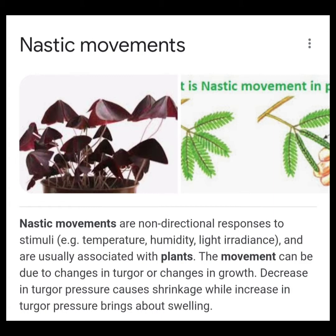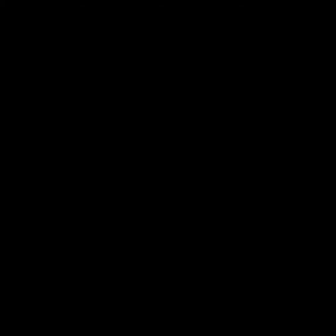We will now learn tropic movements in detail. Tropic movements mean movement towards or away from a stimulus. The first movement is Phototropism — that is movement of plants in the direction of light.